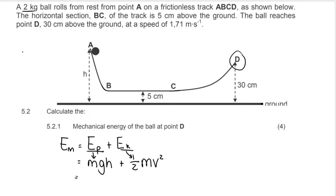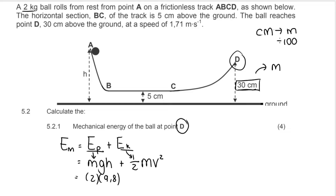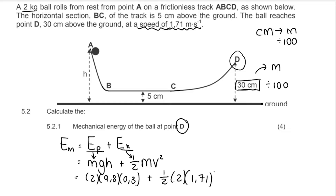Now I'll substitute. The mass is 2 kg — in physics mass must always be in kilograms. Gravitational acceleration is 9.8. At point D the height is 30 centimeters above the ground; convert to meters by dividing by 100, giving 0.3 m. That gives the potential energy term. For kinetic energy: mass is 2 kg, velocity at D is 1.71 m/s — don't forget to square it, that's a very common mistake.